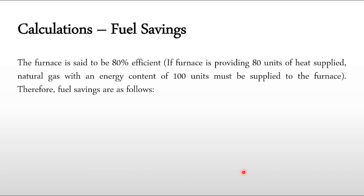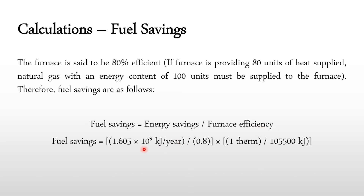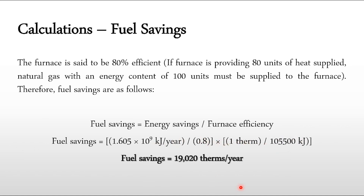From the energy savings we compute the fuel savings. The furnace has 80% efficiency, meaning 100 units of fuel input yields 80 units of heat. Fuel savings = energy savings / furnace efficiency = (1.605 × 10⁹ kJ/yr) / 0.8, then divided by 105,500 kJ/therm to convert to therms. The result is 19,020 therms per year saved.